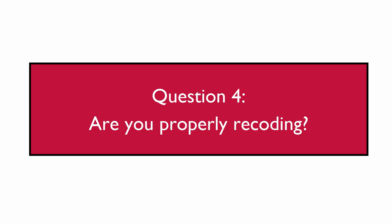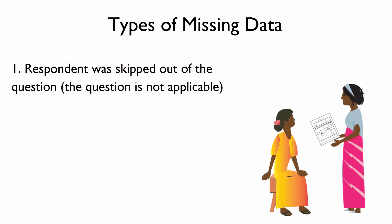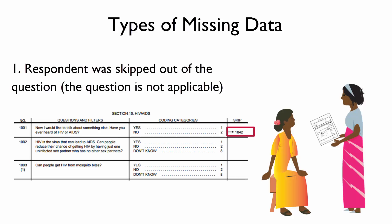Question four is: are you properly recoding? DHS has two types of missing data. Either the respondent was skipped out of the question, or they didn't respond to the question. For example, in the questionnaire, what happens to respondents if they never heard of HIV? Do they get asked, can people get HIV from mosquito bites? The answer is no. They are skipped out of all HIV knowledge section questions if they have never heard of HIV.